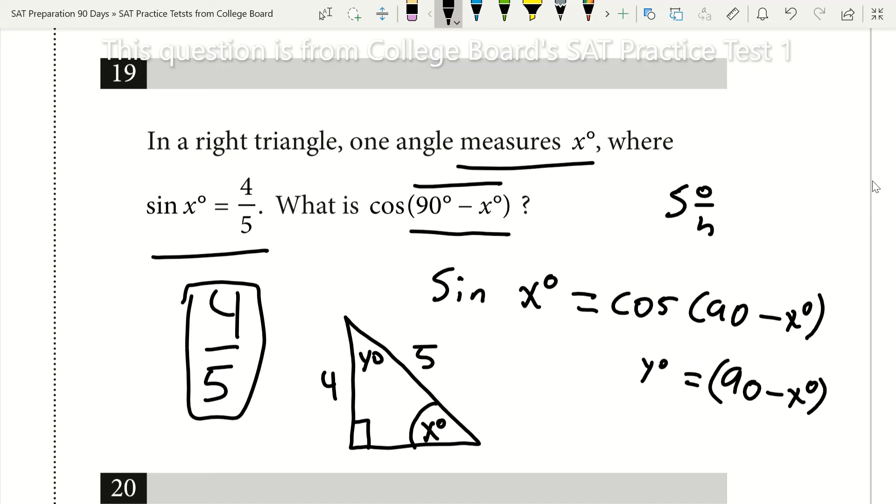Now we're asked for the cosine of 90 minus x, which we know in this case is angle y. Well, the cosine is the adjacent over the hypotenuse. We see the adjacent side length to angle y is 4, and the hypotenuse is 5.